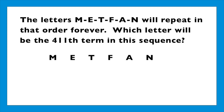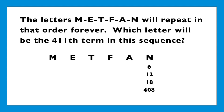If we count through the sequence, N lands on position 6, and continues landing on every multiple of 6. You can jump to any multiple of 6 and it will always land on N. So, thinking about 411: the closest multiple of 6 is 408. That means N lands on position 408. From there, just count — M would be 409, E would be 410, and T would be 411. The answer is T.